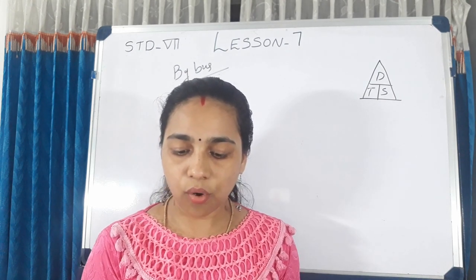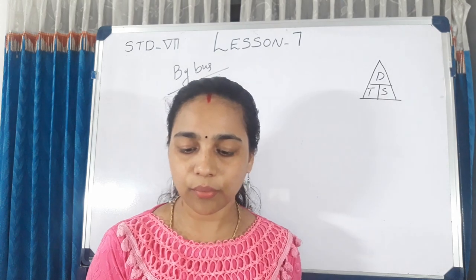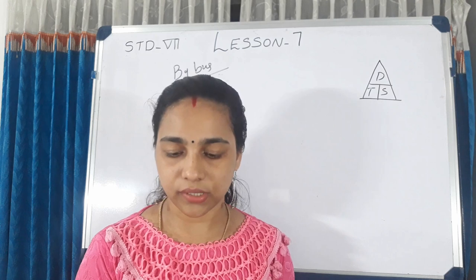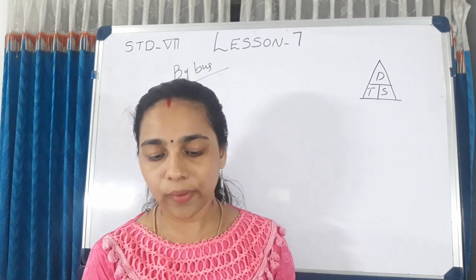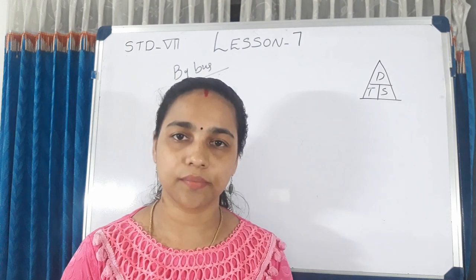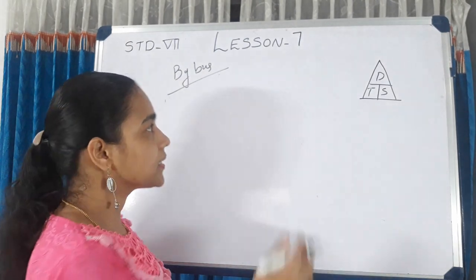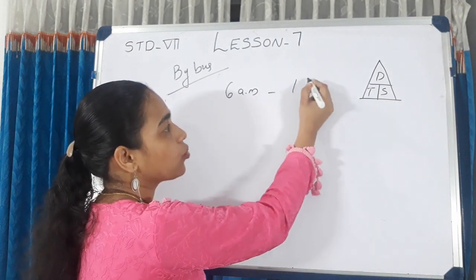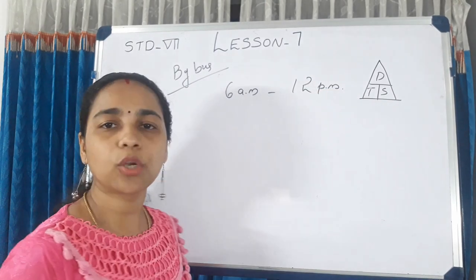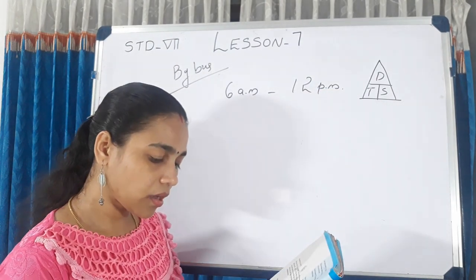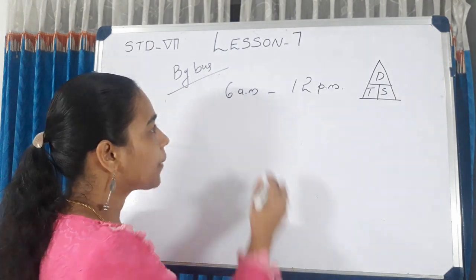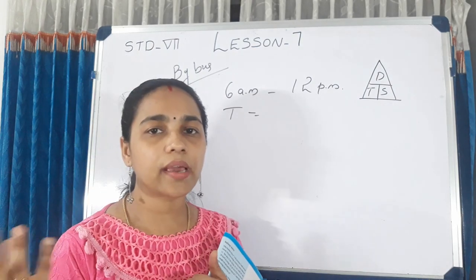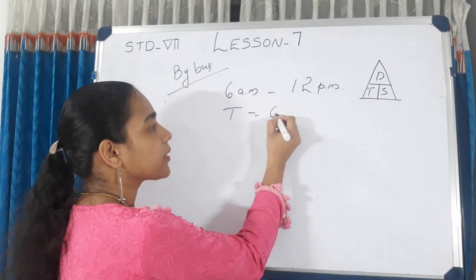A bus leaves at 6 in the morning and reaches at 12 noon, running at 40 km per hour on average. To reach 1 hour earlier, by how much should the average speed be increased? The journey time is 6 hours at 40 km per hour.